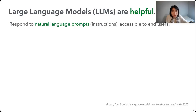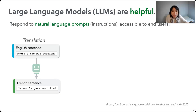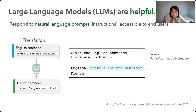Since 2020, our NLP community has deployed these so-called large language models, and what's impressive about them is their ability to respond to arbitrary natural language prompts at runtime. For example, if I want to do English to French translation, I don't need to train a separate engine — I just feed the model something like 'given the English sentence, translate to French,' and then the model can continue the prompt with the French translation.